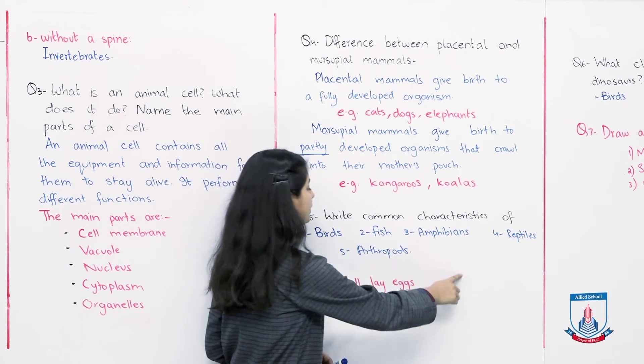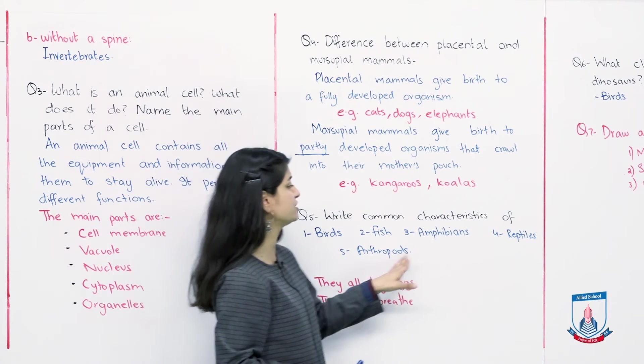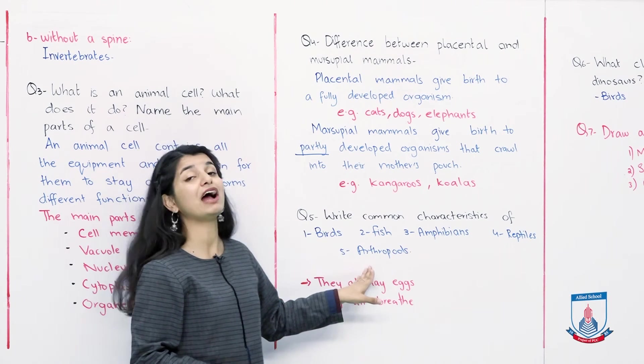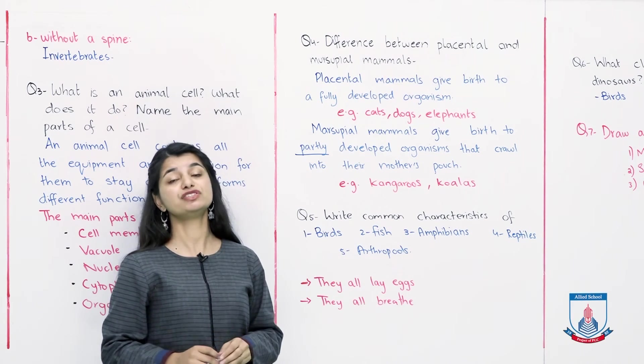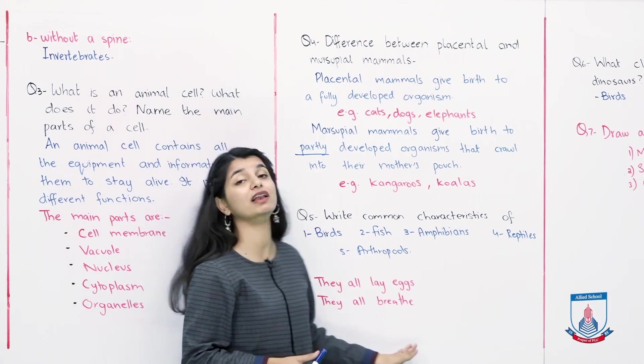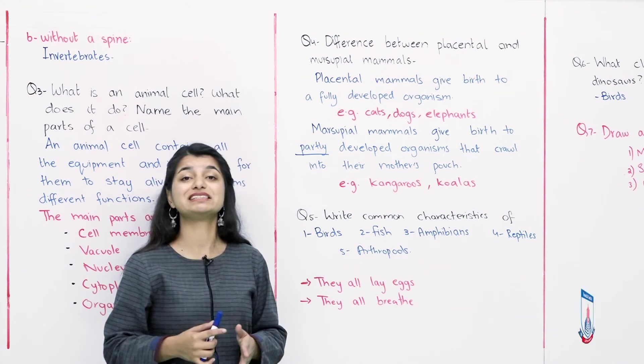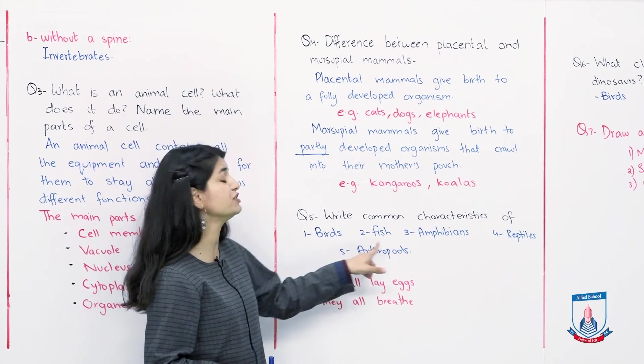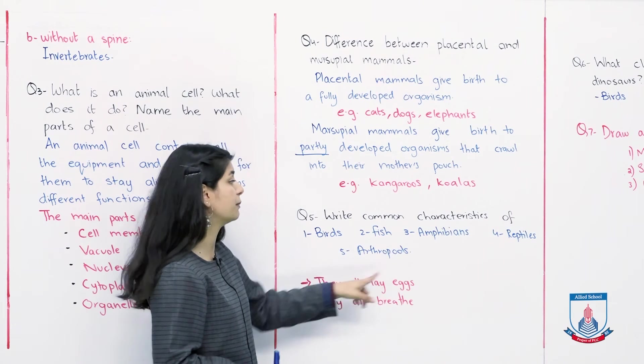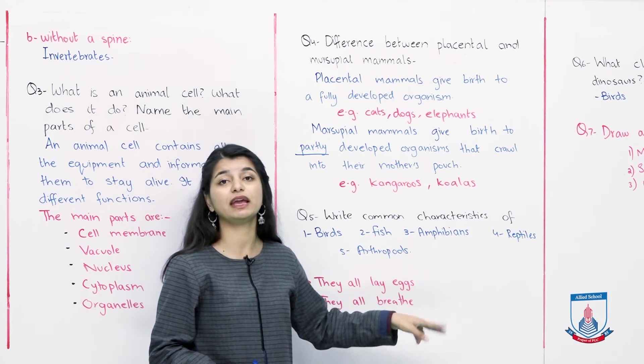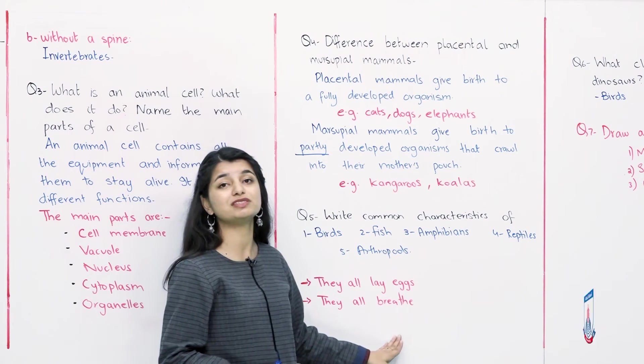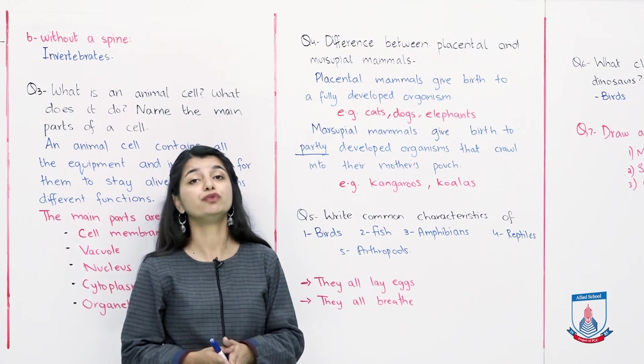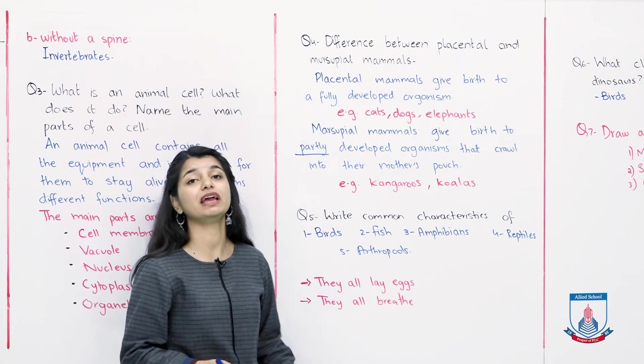Question number 5: Write common characteristics of each of them. You have to write the characteristics which are common among these animals: birds, fish, amphibians, reptiles, arthropods. So you have to mention features that are common to all of them. They all lay eggs, they all search for their food, they all eat other animals or plants. These things you can mention.